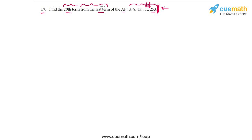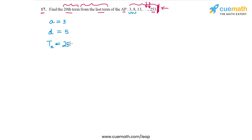There are two approaches to solve this problem and I'm going to show you both, but in either approach we have to first find the number of terms in the AP. So the first term A is equal to 3. The common difference D can be found by taking the difference of any pair of consecutive terms, so D is 5, and the last term (the nth term) is 253. We need to find N.